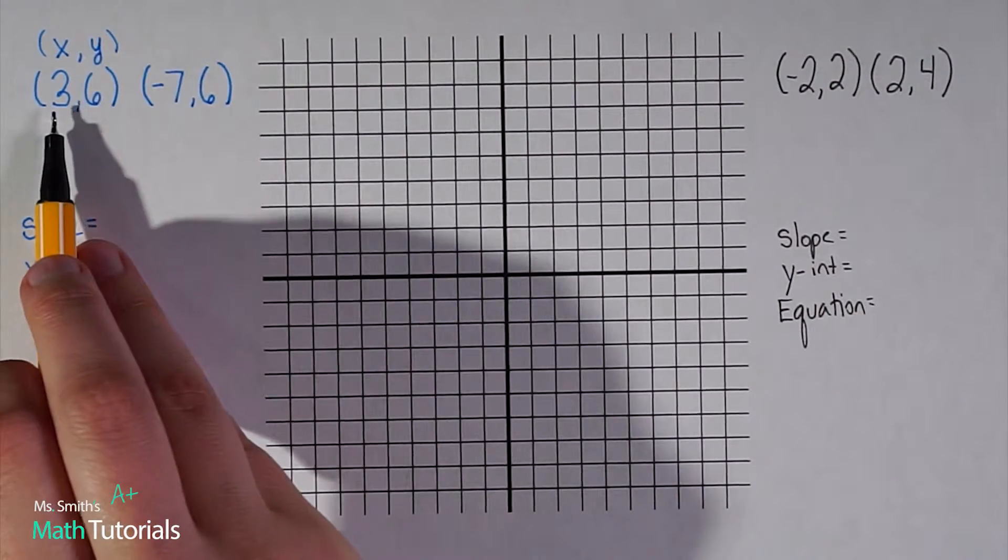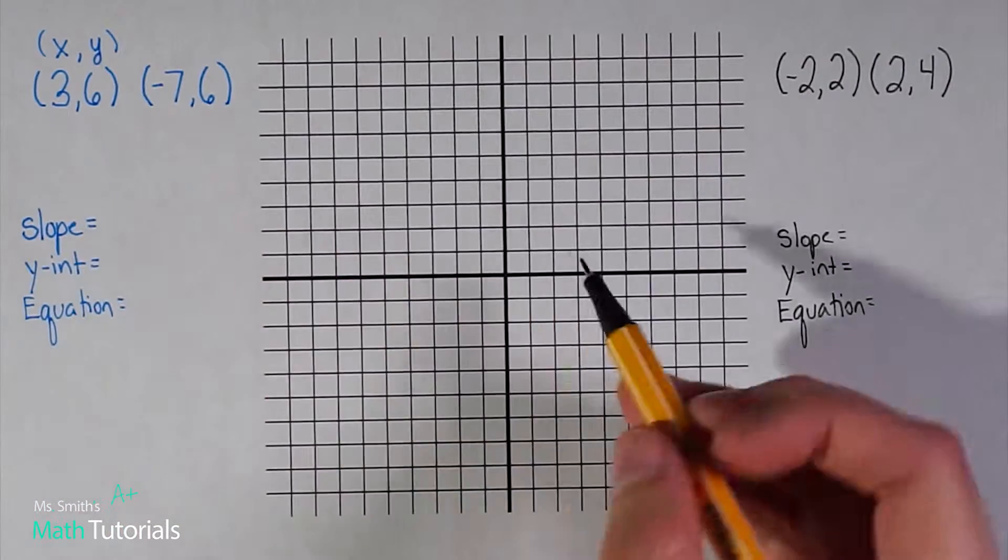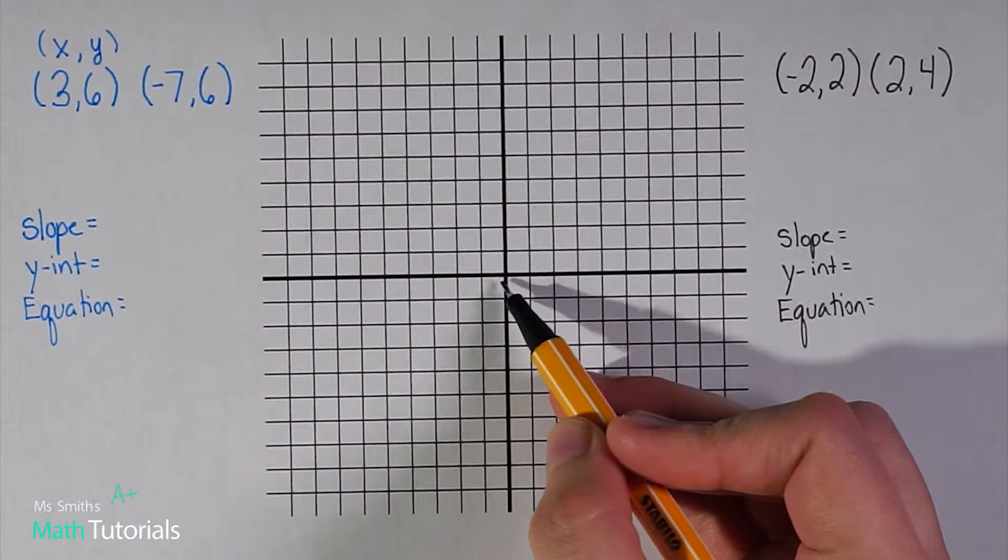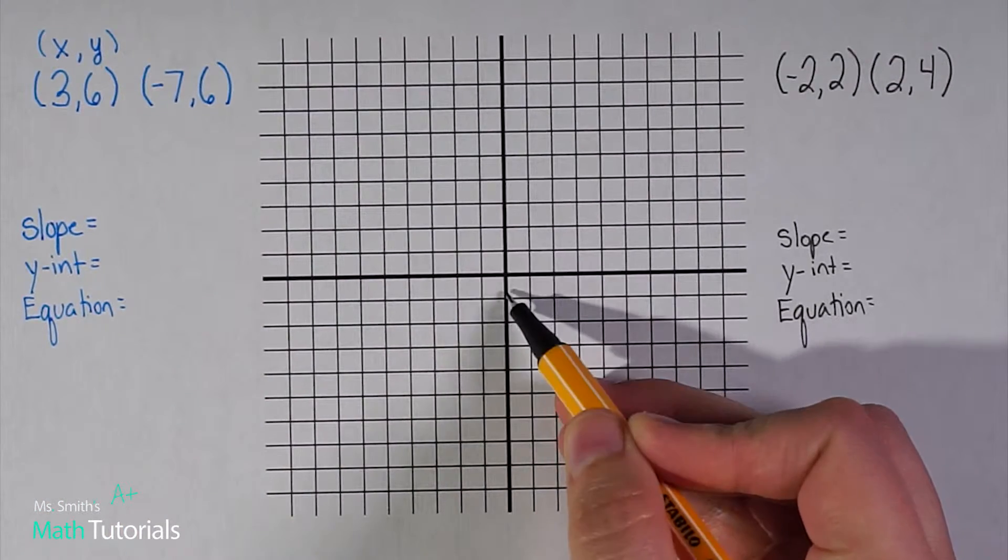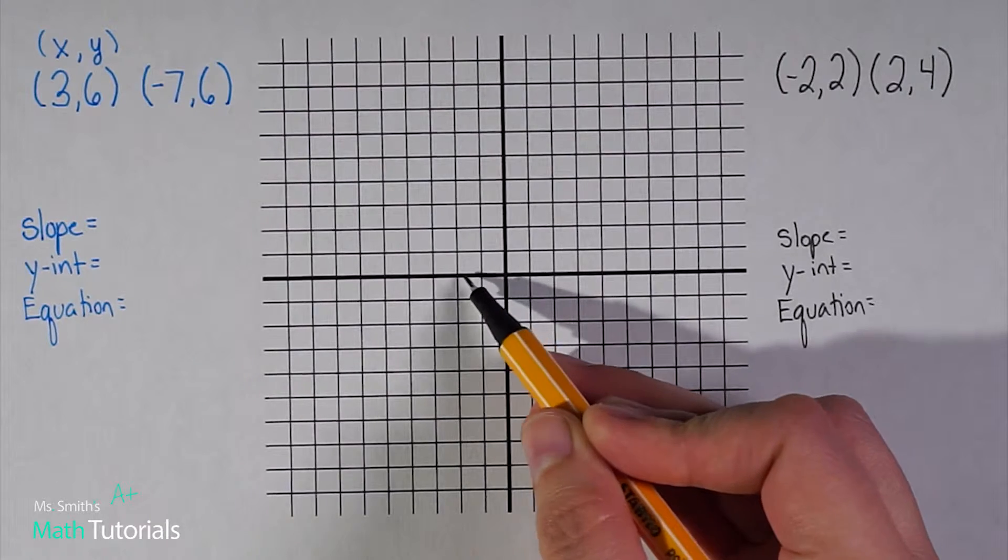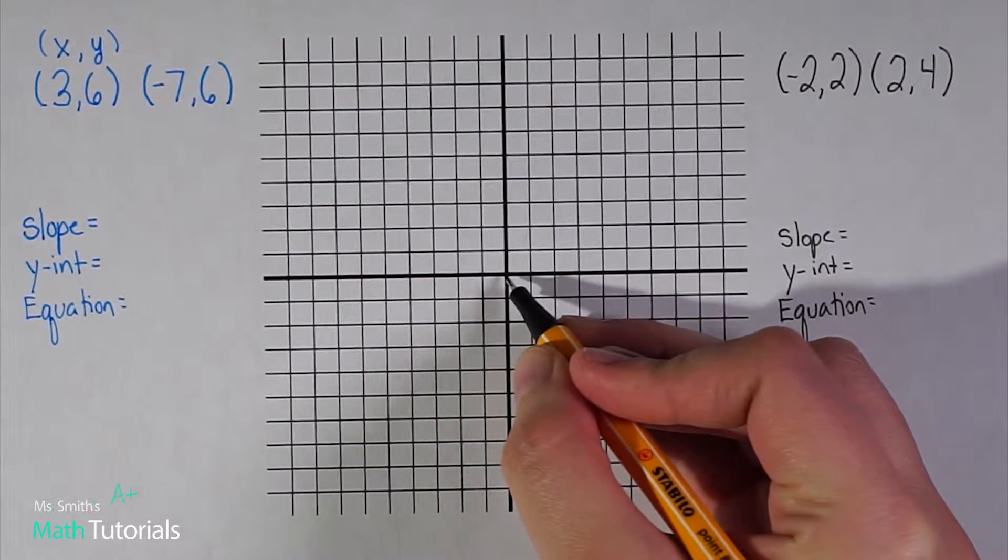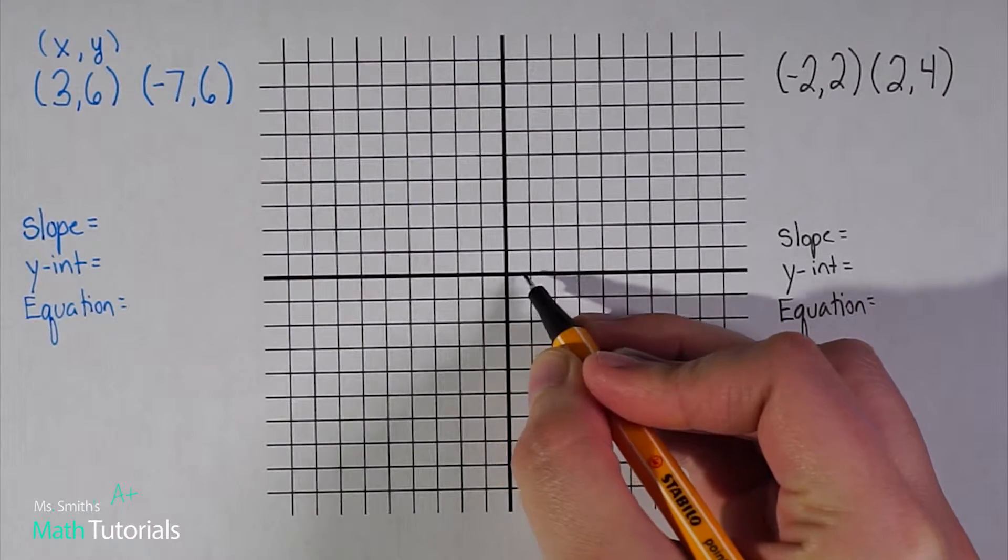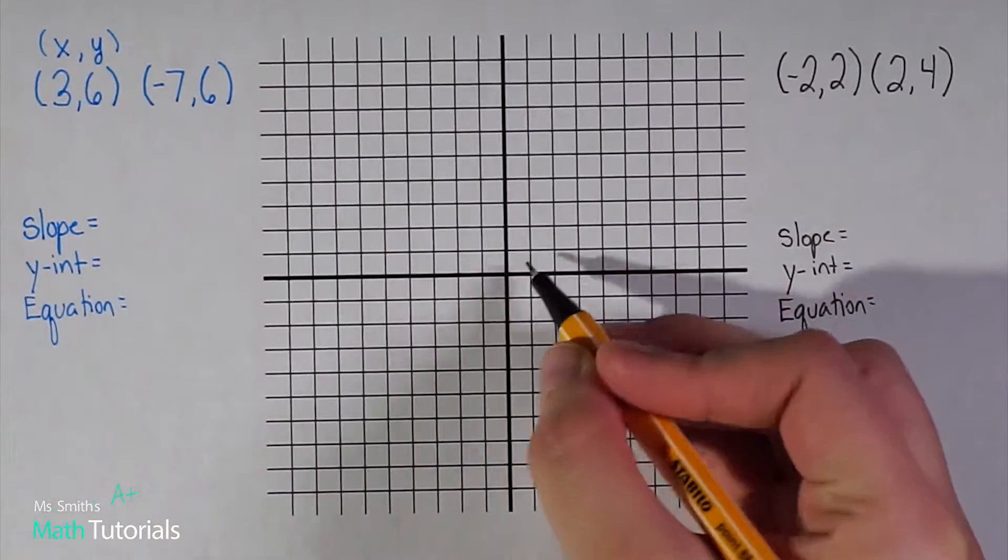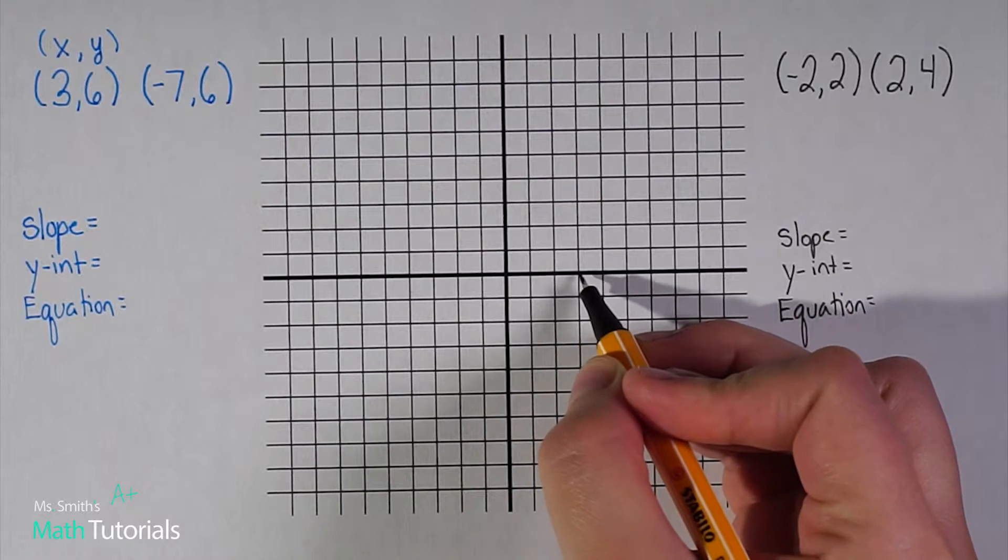I always start with x. In this point, my x is positive three. I start here at the origin. This is zero, zero on the y-axis and zero on the x-axis. I start at zero and count over for my x positive three: one, two, three.